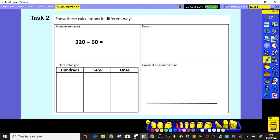Task 2 is showing the calculations again in different ways. So, writing the number sentence, drawing it, using either base 10s or place value counters. You can show it on a place value grid, and explain it on a number line.